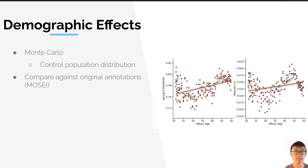By building a dataset like this, we can study the effect that annotator demographics has on our dataset. To the right, we can use something called a Monte Carlo simulation to observe effects of different distributions of annotators, and we can compare this against MOSE. As you can see, as age goes up, there is a greater similarity with original annotations, as well as an increase in correlation. Through these experiments, we can generally see that matching demographics to crowd worker demographics showed higher similarity with previous annotations.